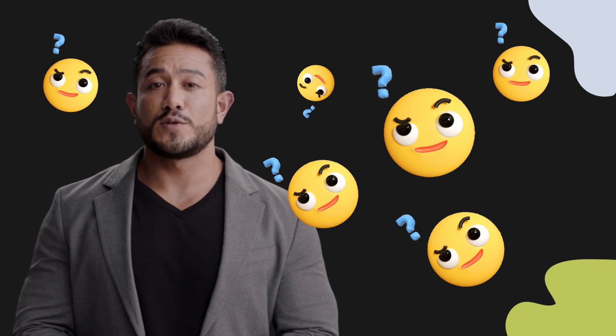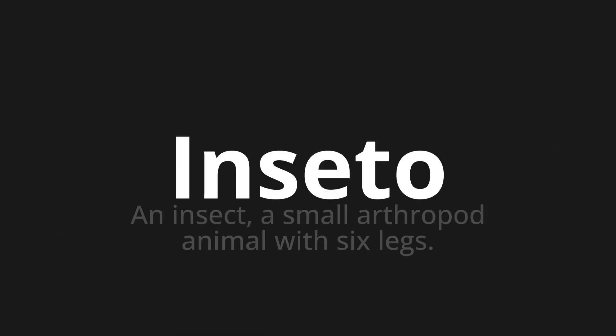Welcome to this pronunciation video. Today we will be focusing on a new word that you might find challenging or intriguing. So let's dive into today's word: Inseto, which means an insect — a small arthropod animal with six legs.